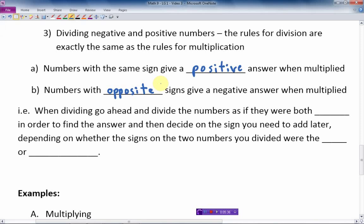See when dividing? Just like in multiplying, we go ahead and we divide the two numbers as if they're both positive. Both positive. In order to find the answer, then we decide on the sign we need to add later, depending on whether the signs on the two numbers you divided were the same or different signs.